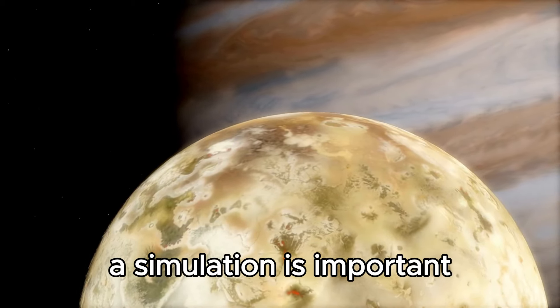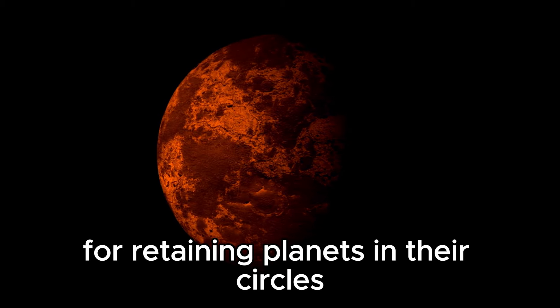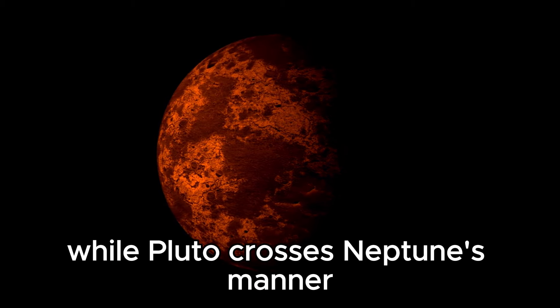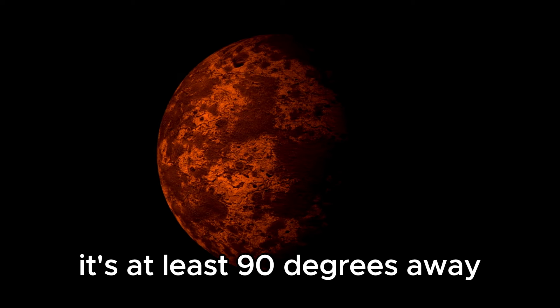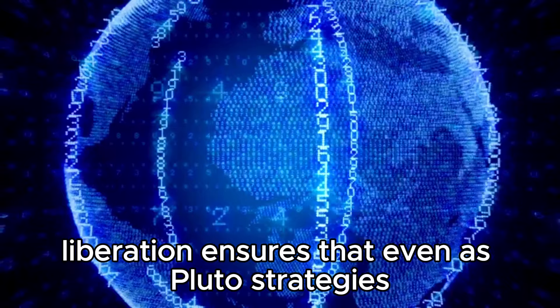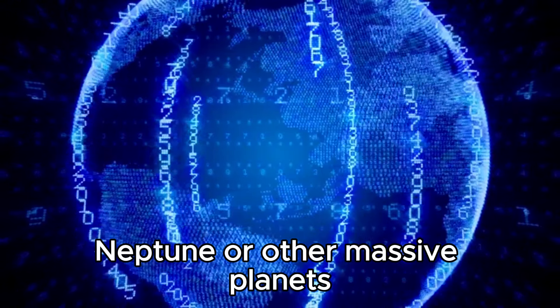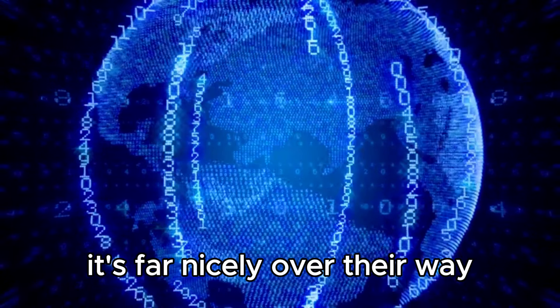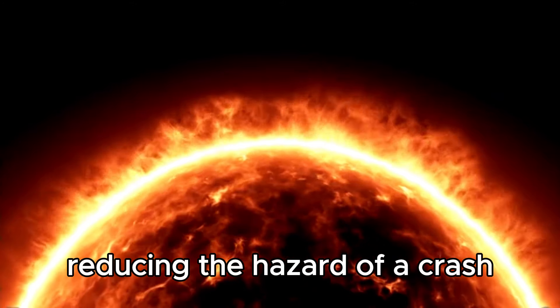Resonance is important for keeping planets in their orbits. While Pluto crosses Neptune's path, it's at least 90 degrees away, keeping them from crashing. Libration ensures that even as Pluto approaches Neptune or other massive planets, it's far well over their path, reducing the hazard of a crash.